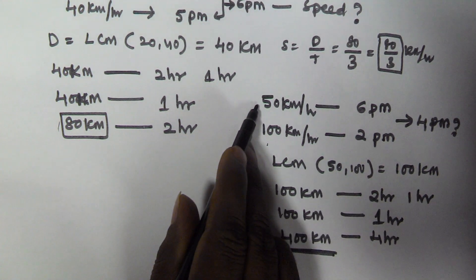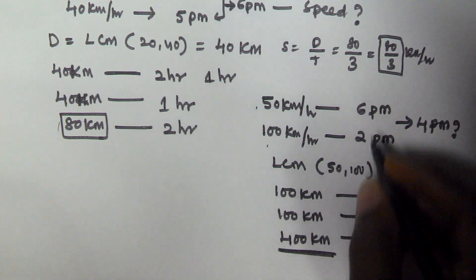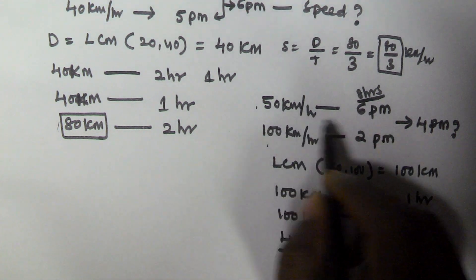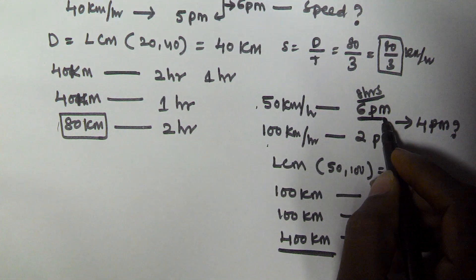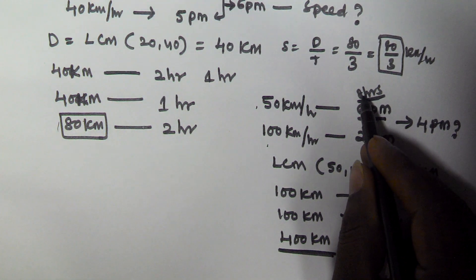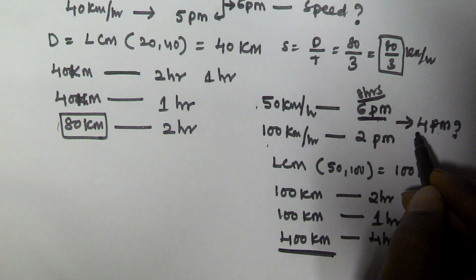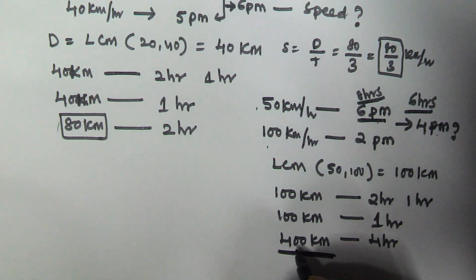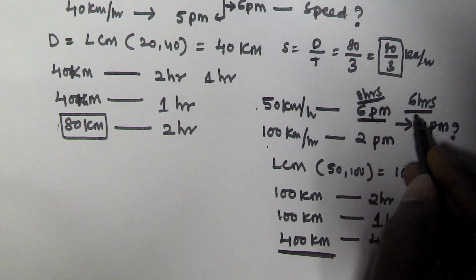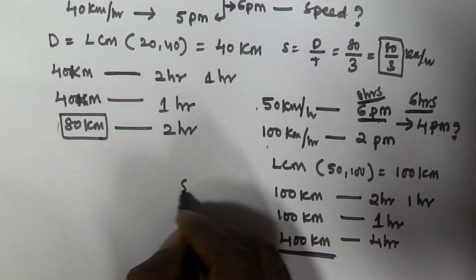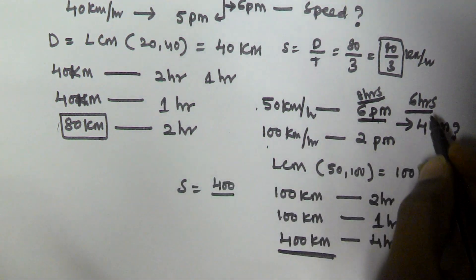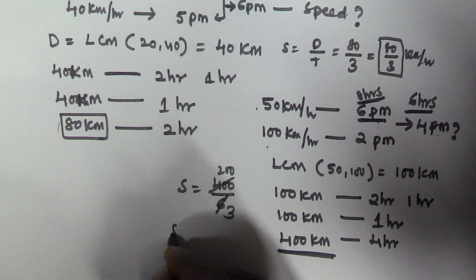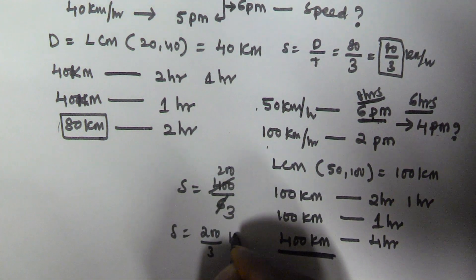On the first day he is travelling with 50 km per hour, so to cover 400 km he has to travel 8 hours. He travels 8 hours and reaches office at 6 pm. To reach at 4 pm he has to travel 6 hours. The distance is 400 km and the journey duration is 6 hours, so the speed is 400 divided by 6, which is 200 by 3 km per hour.